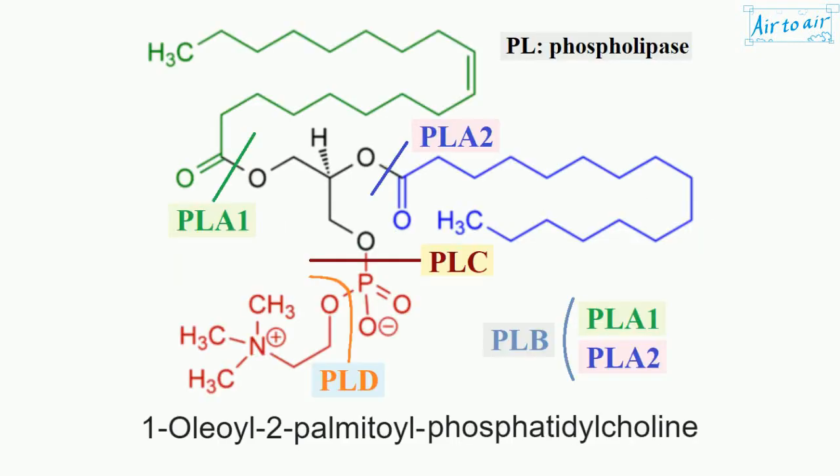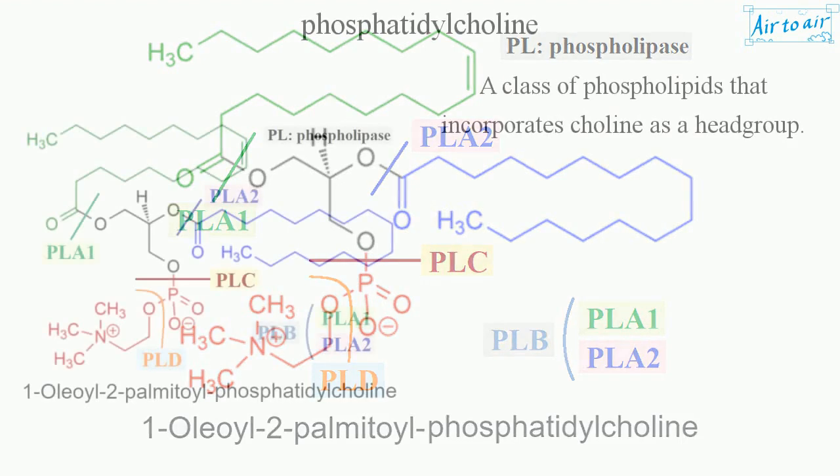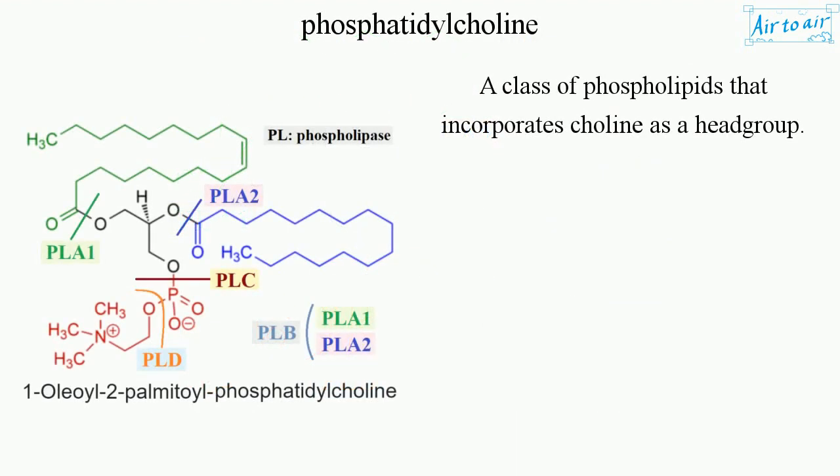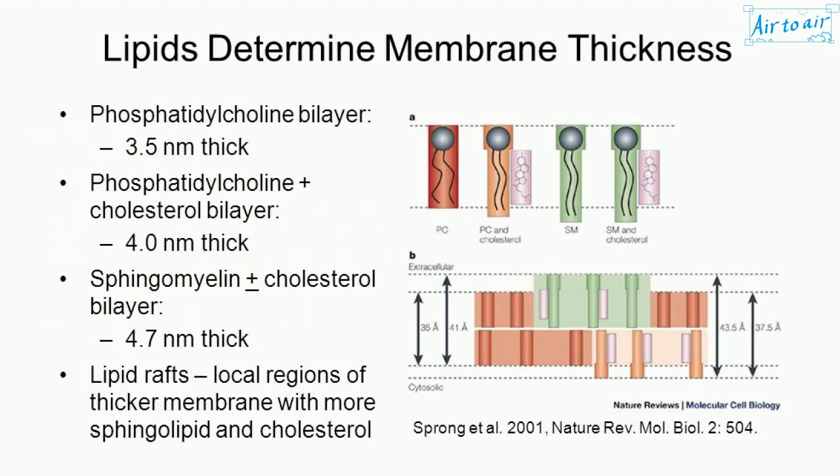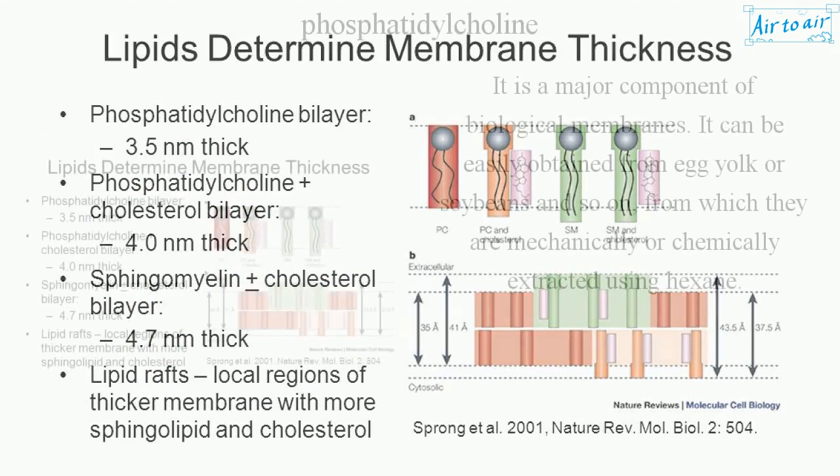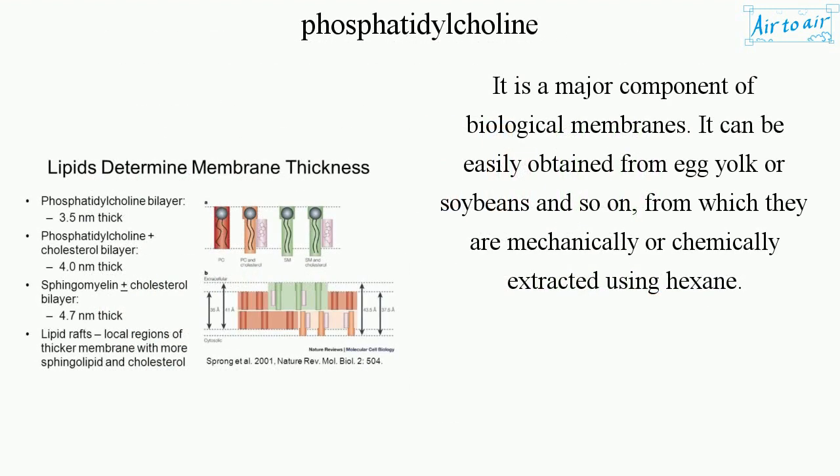Phosphatidylcholine is a class of phospholipids that incorporates choline as a head group. It is a major component of biological membranes.